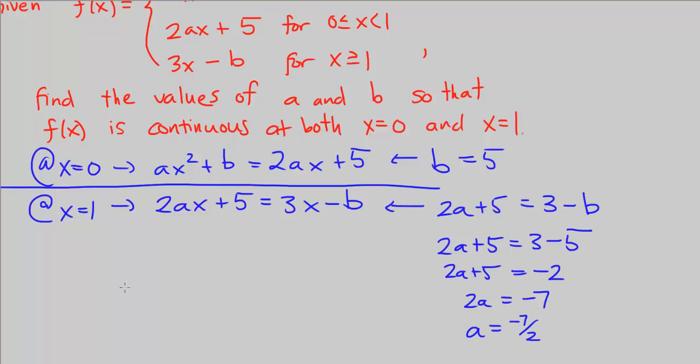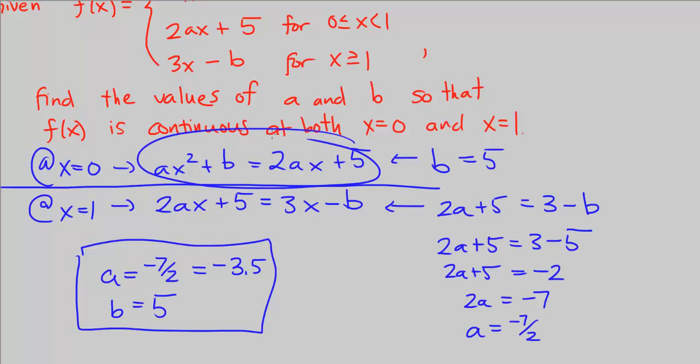So that means for this piecewise defined function to be continuous, a has to equal negative 7 over 2, which is if you plug in your calculator or know, is negative 3.5, and b has to equal 5. So don't be intimidated by this problem. It was pretty simple because the first part just shows us if we plug in x equals 0, b is 5.